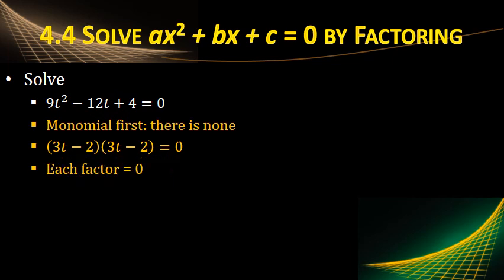So now take each factor equal to 0. Same factor. So it's just 3t minus 2 equals 0. Add the 2. Divide by 3. So our answer is 2 thirds. Check by plugging it back in.